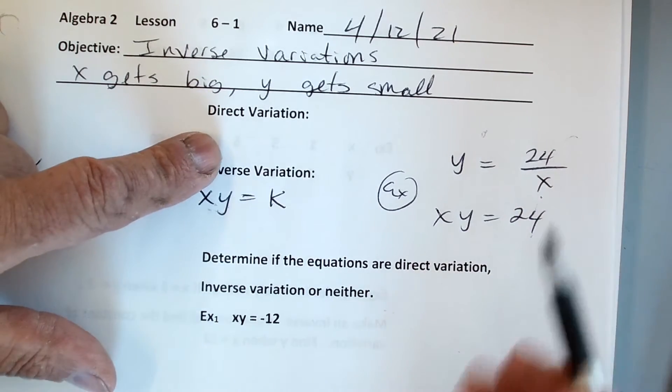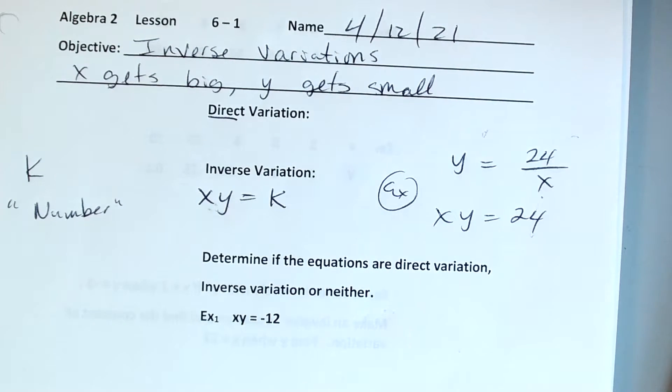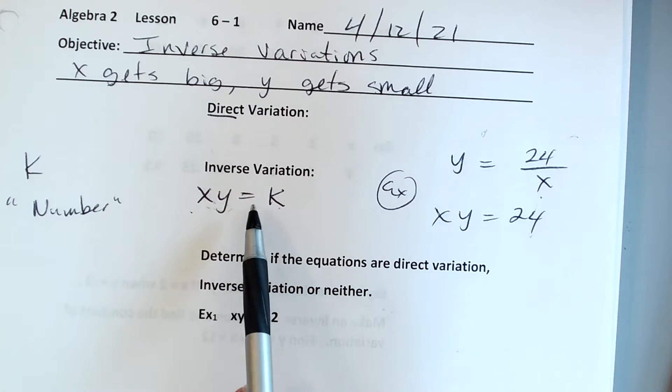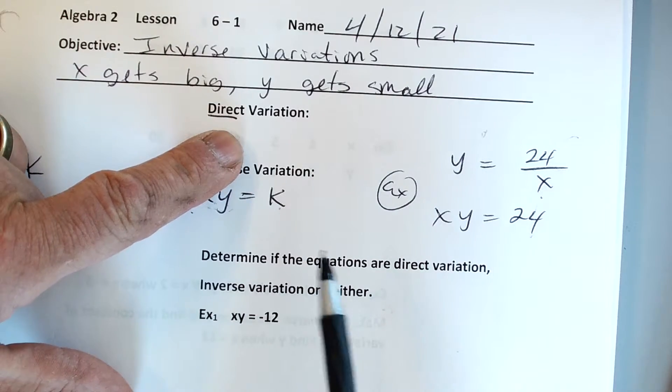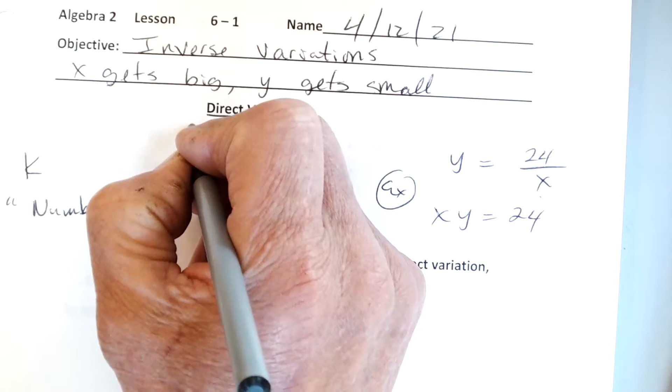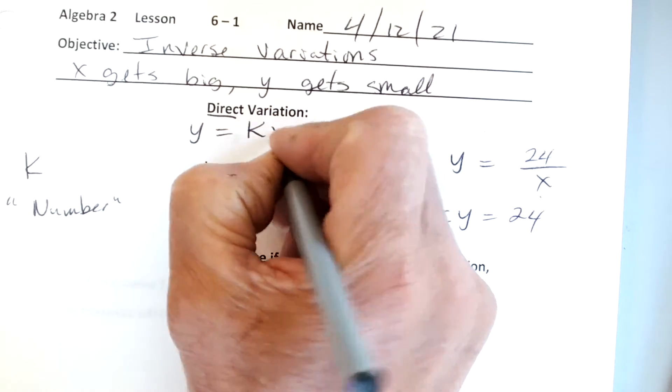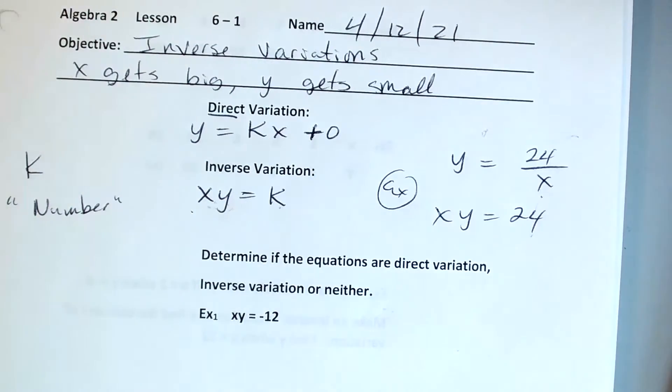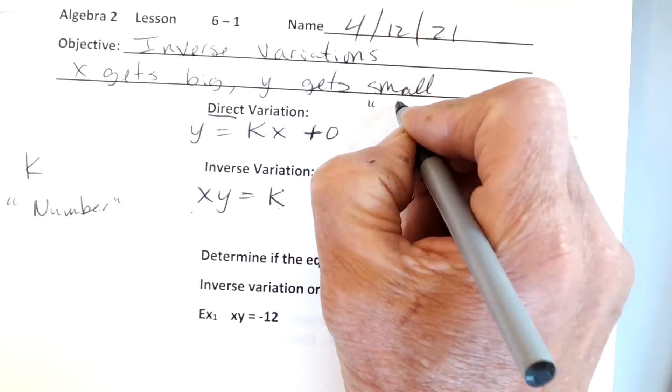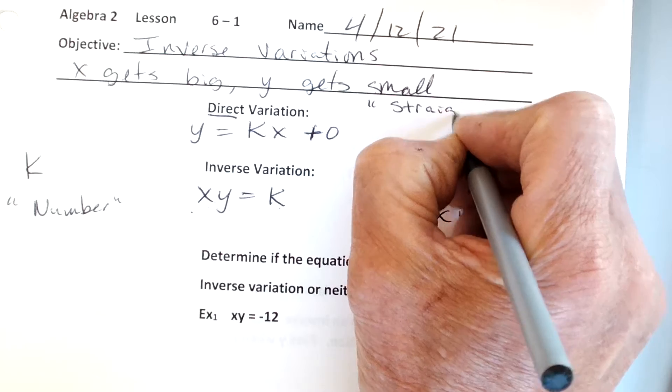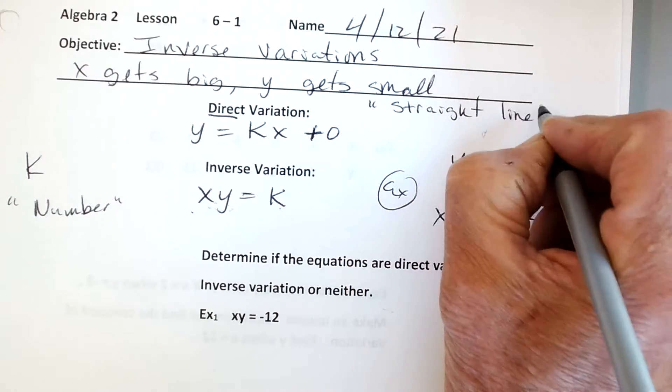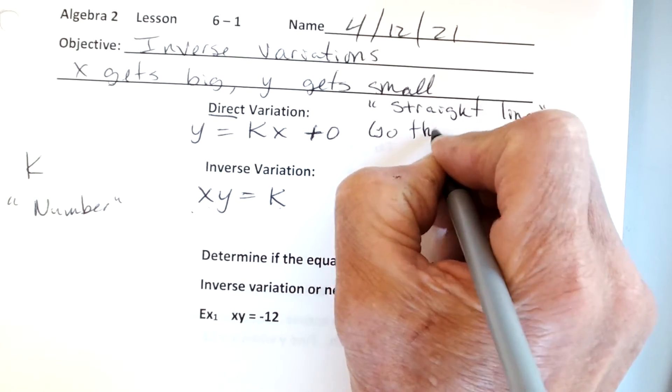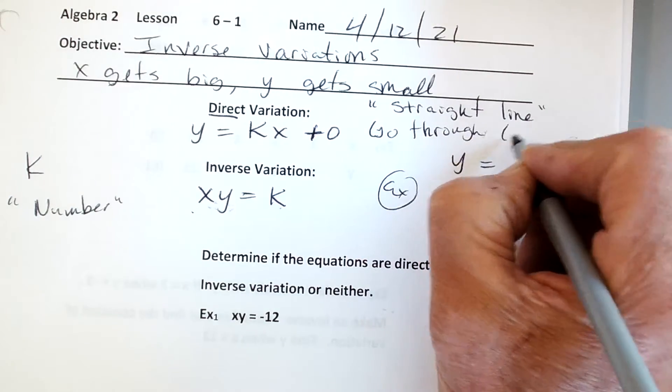We also have a direct variation, which is different. Inverse variation: xy equals some number. However, as one gets big, the other gets small. But direct variation is they both get big together. Direct variation is basically y equals some kx. I'm going to have you put plus 0. You'll never see the plus 0, but I want you to put it because this direct is a straight line, and it goes through 0, 0.